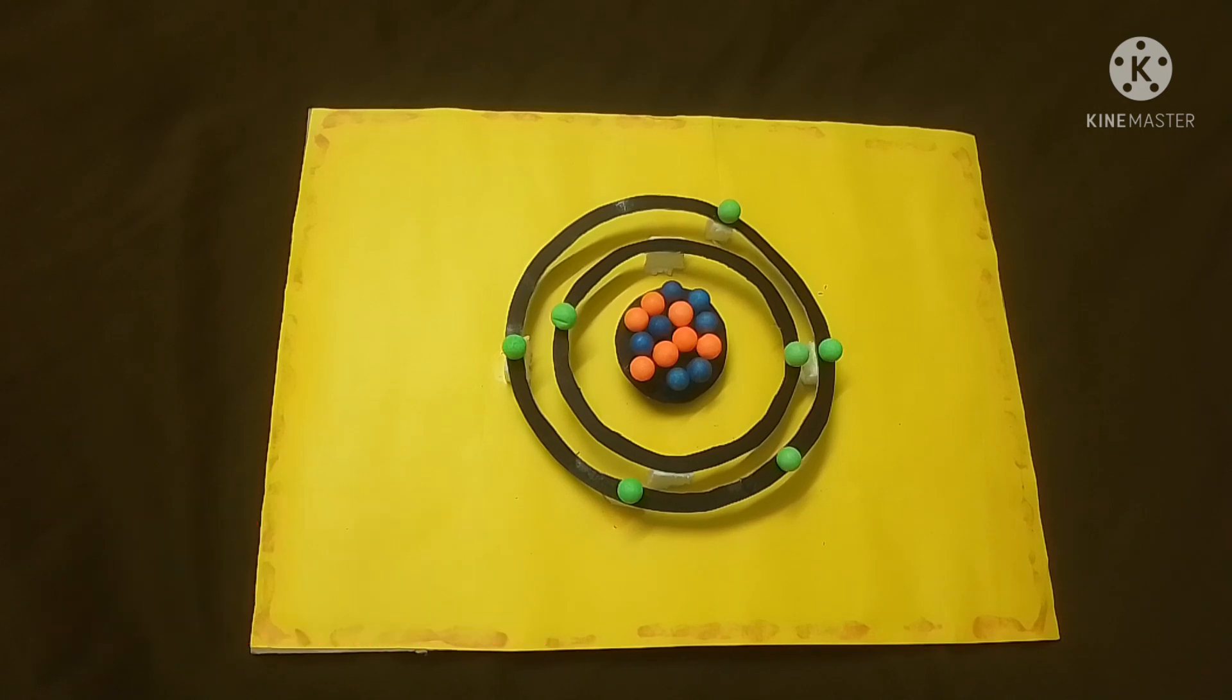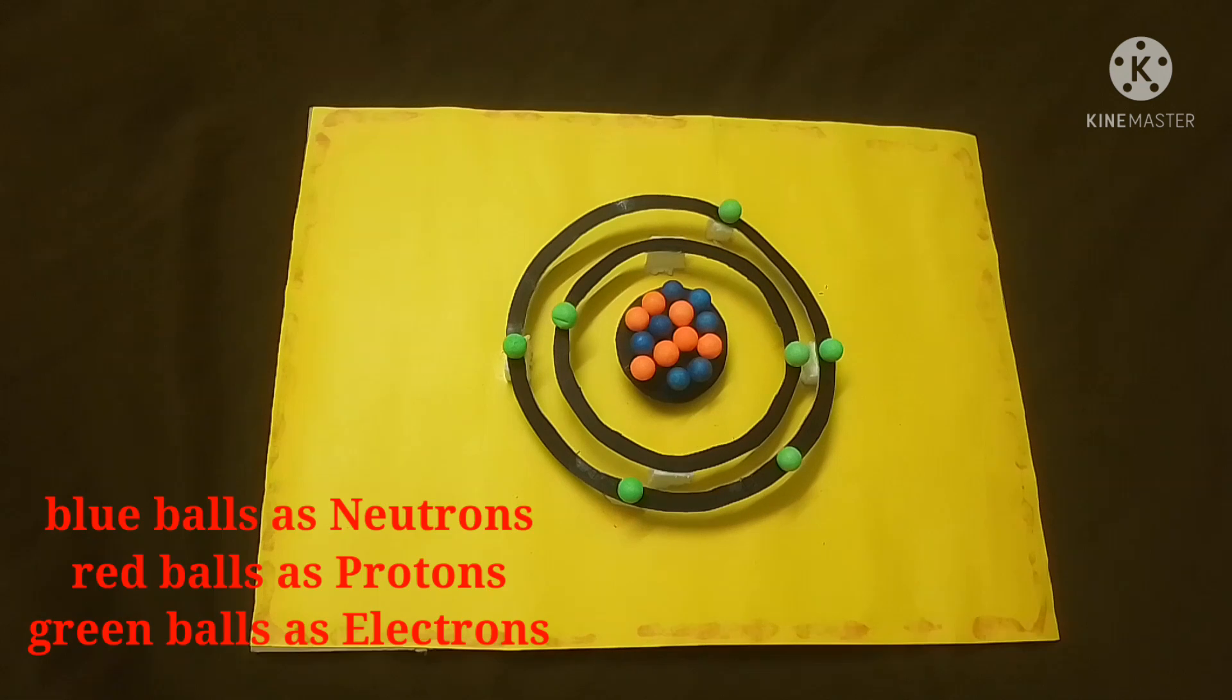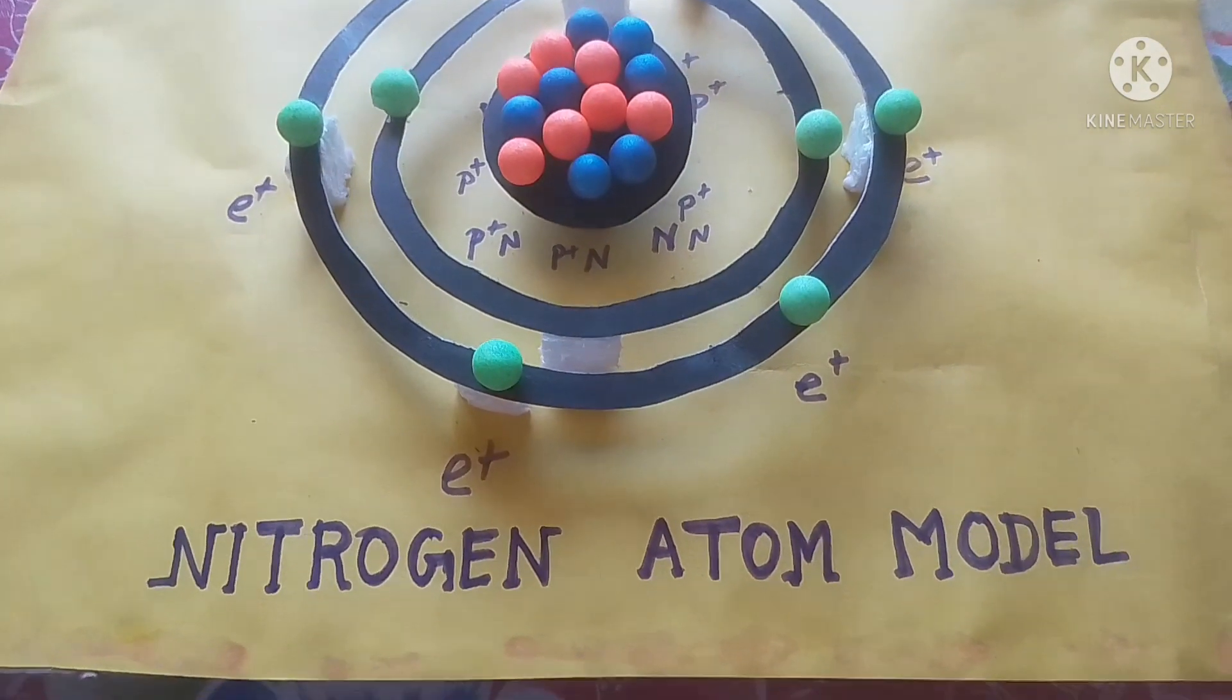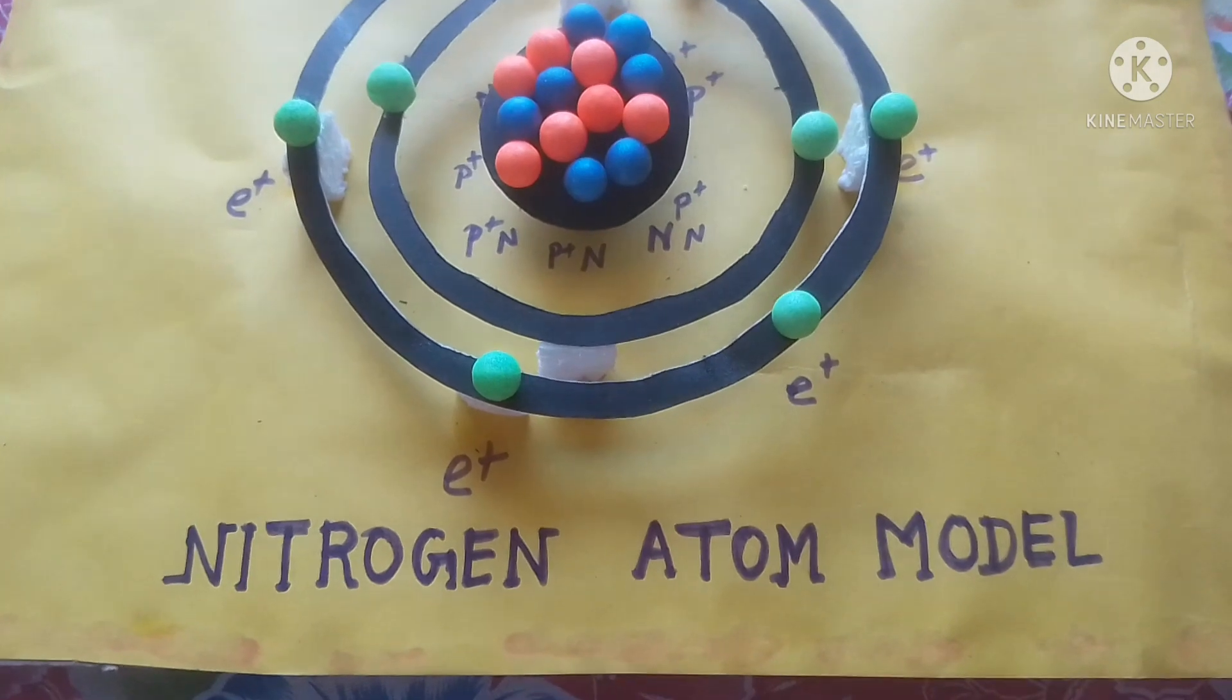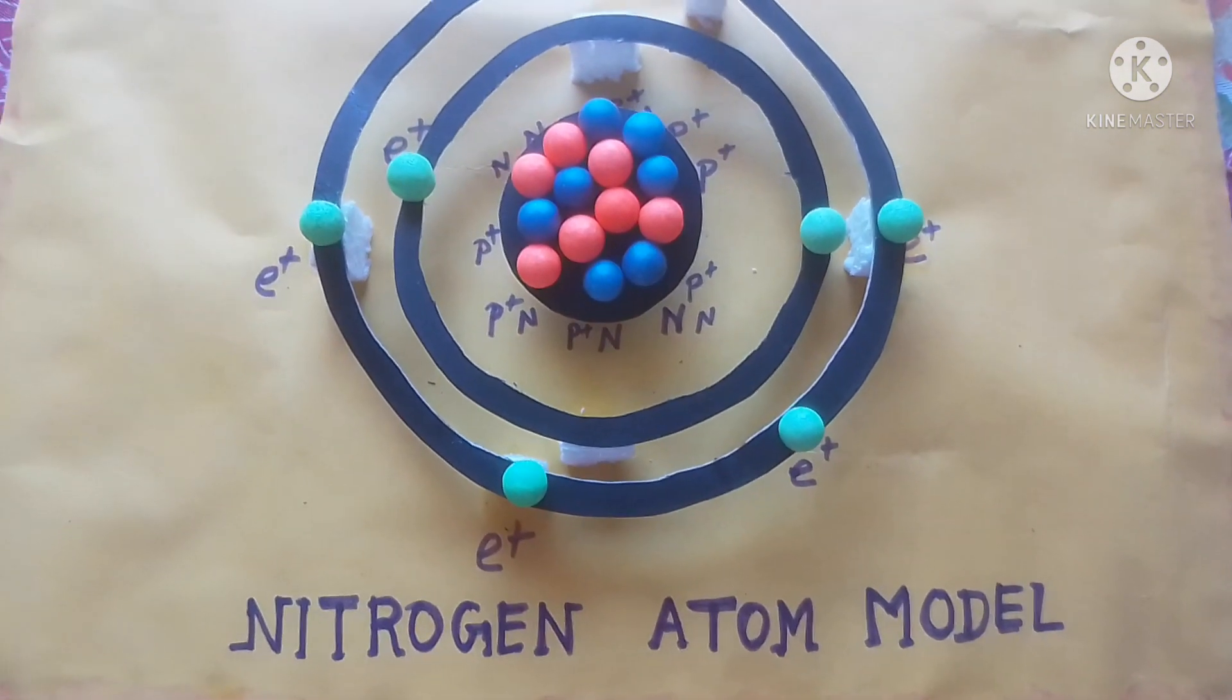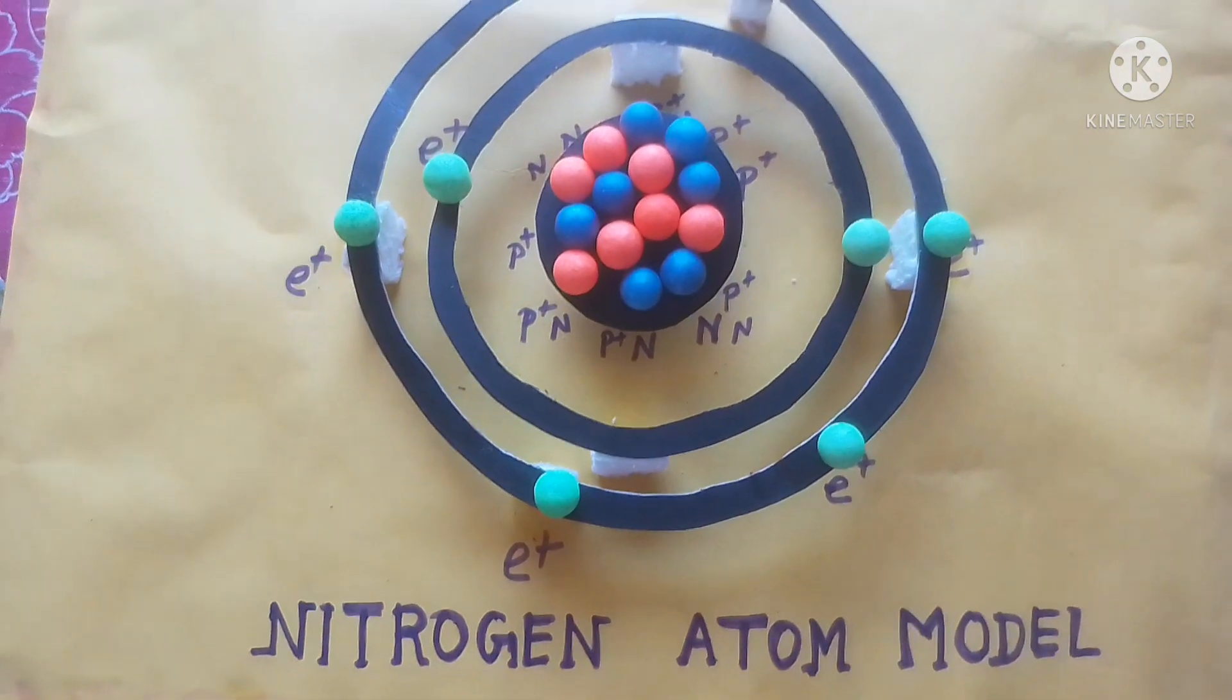So, my beautiful model of an atom is ready now. An electrically stable nitrogen atom consists of seven protons in its nucleus as well as seven electrons in its outer shells. You can also make any model of an atom of any element following this process.